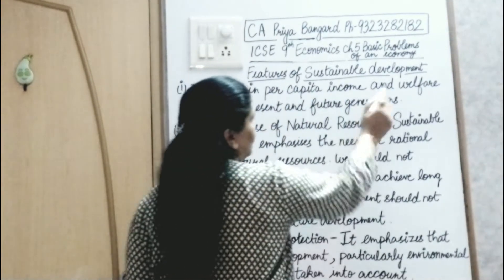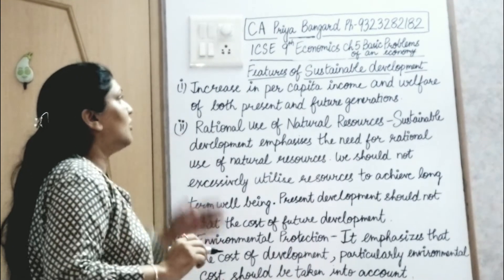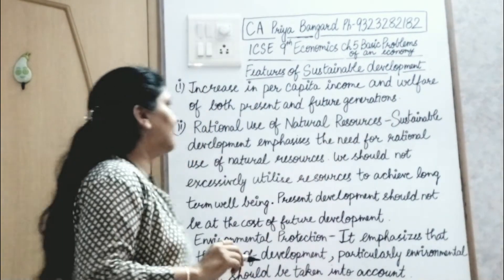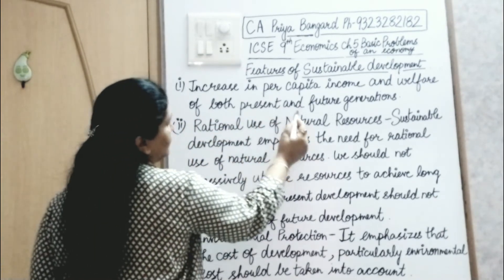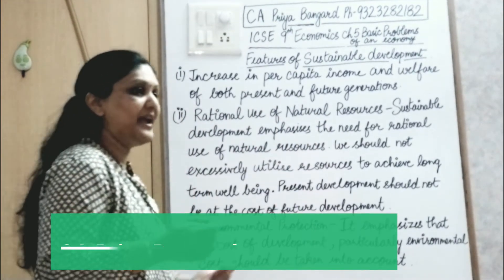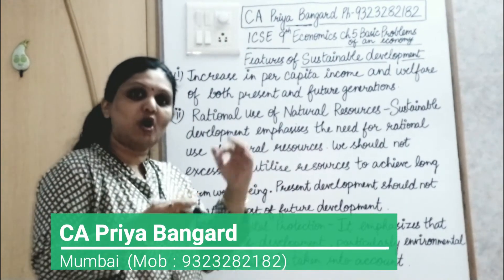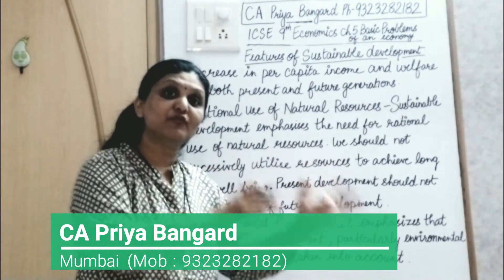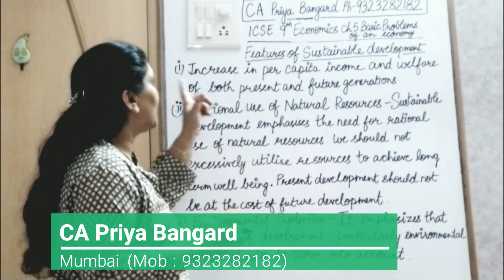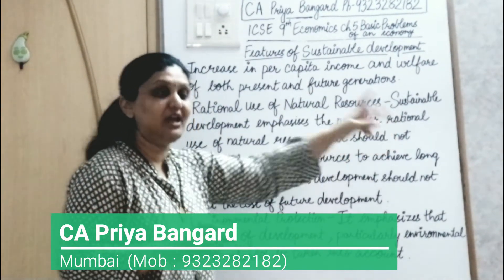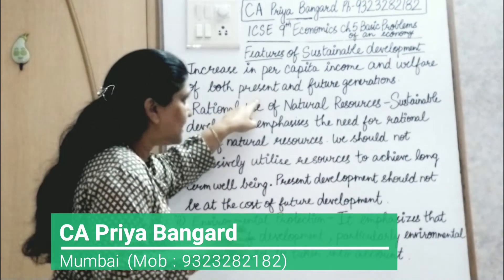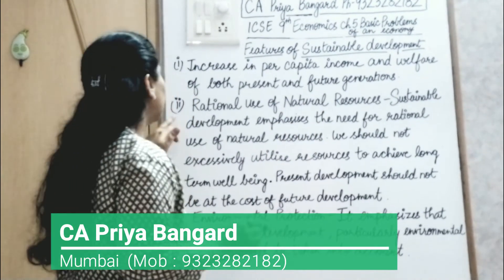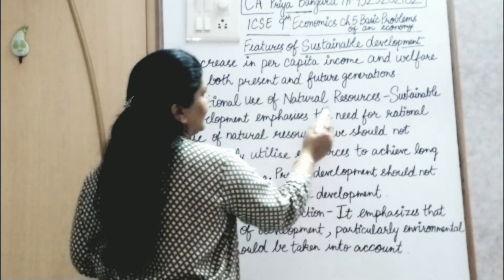The first feature of sustainable development is increasing per capita income and welfare of both present and future generations. During sustainable development, you are not thinking of the current generation only — you are saving resources for the future generation also, so that per capita income and welfare both increase for present as well as future generations.